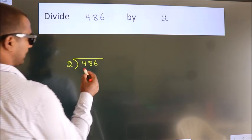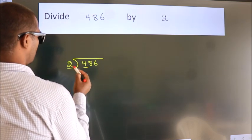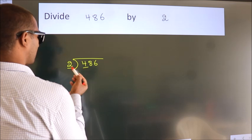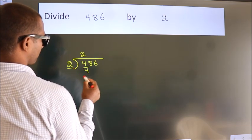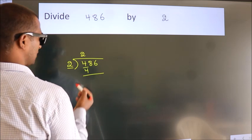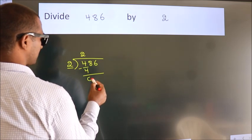Next, here we have 4, here 2. When do we get 4? In the 2 table. 2 two's 4. Now we should subtract. We get 0.